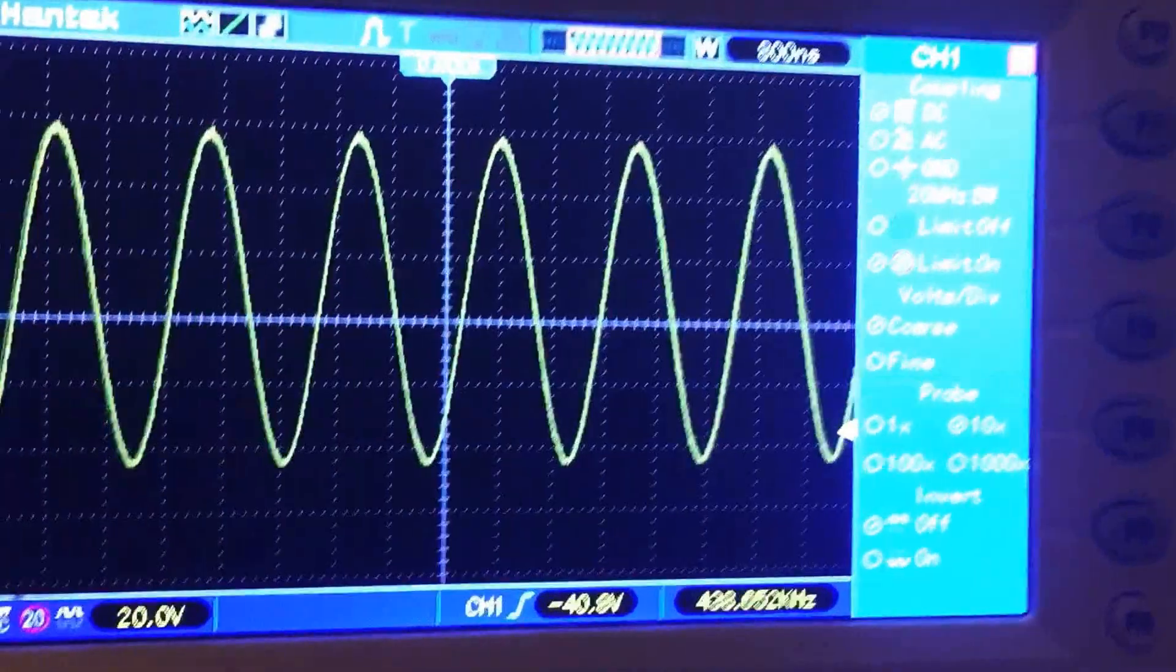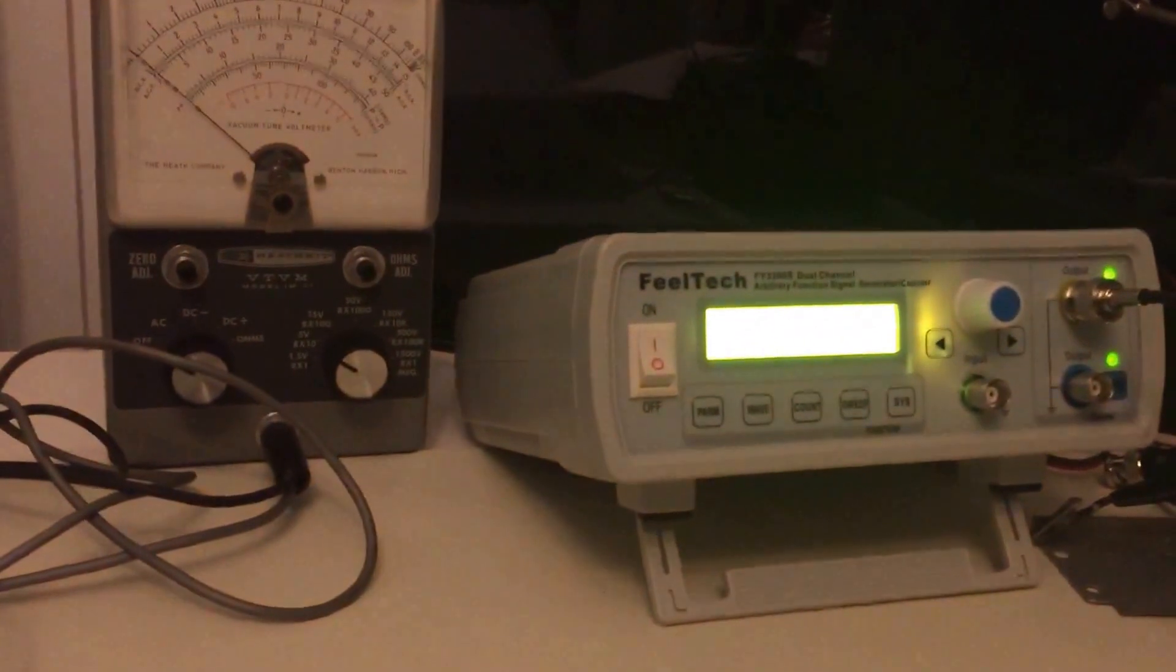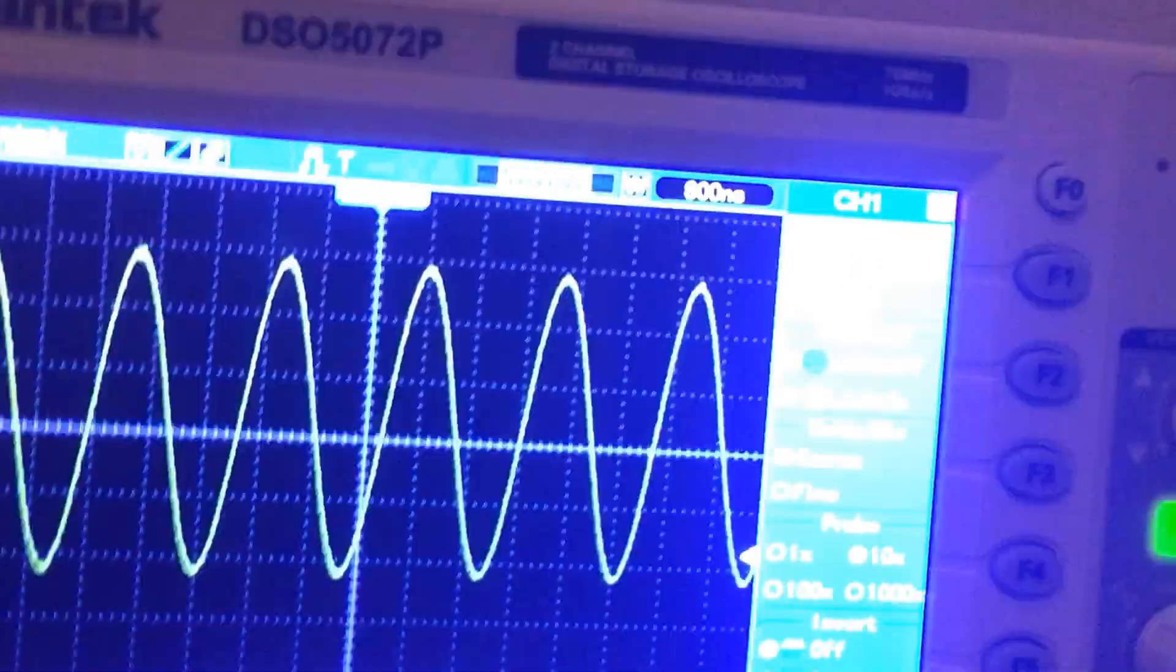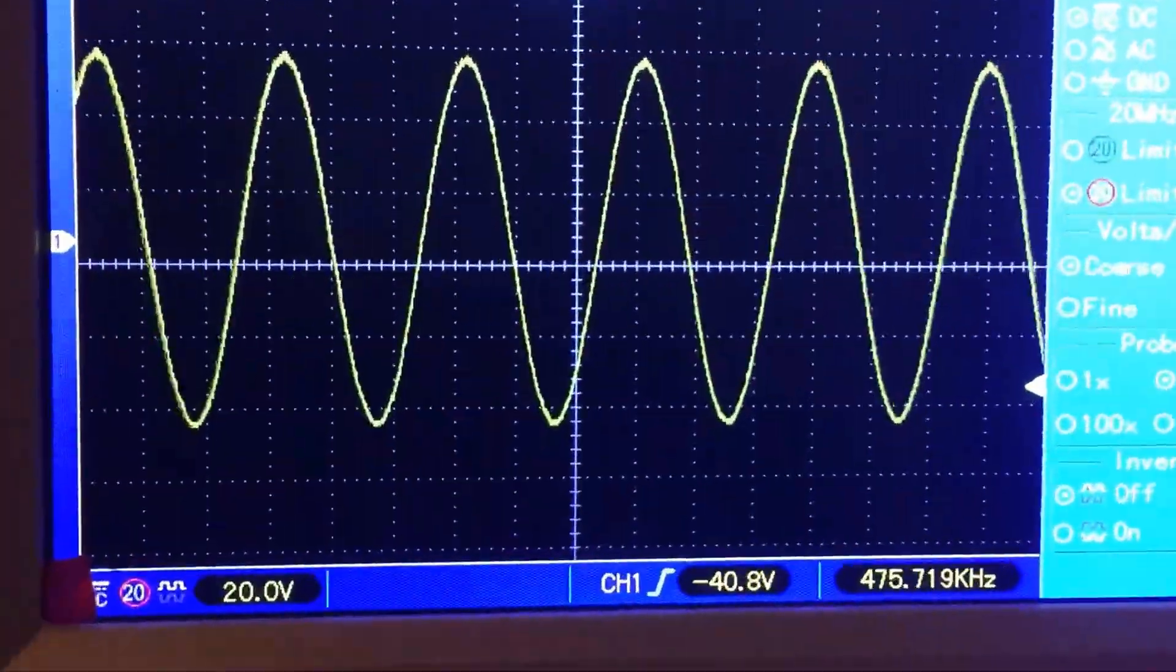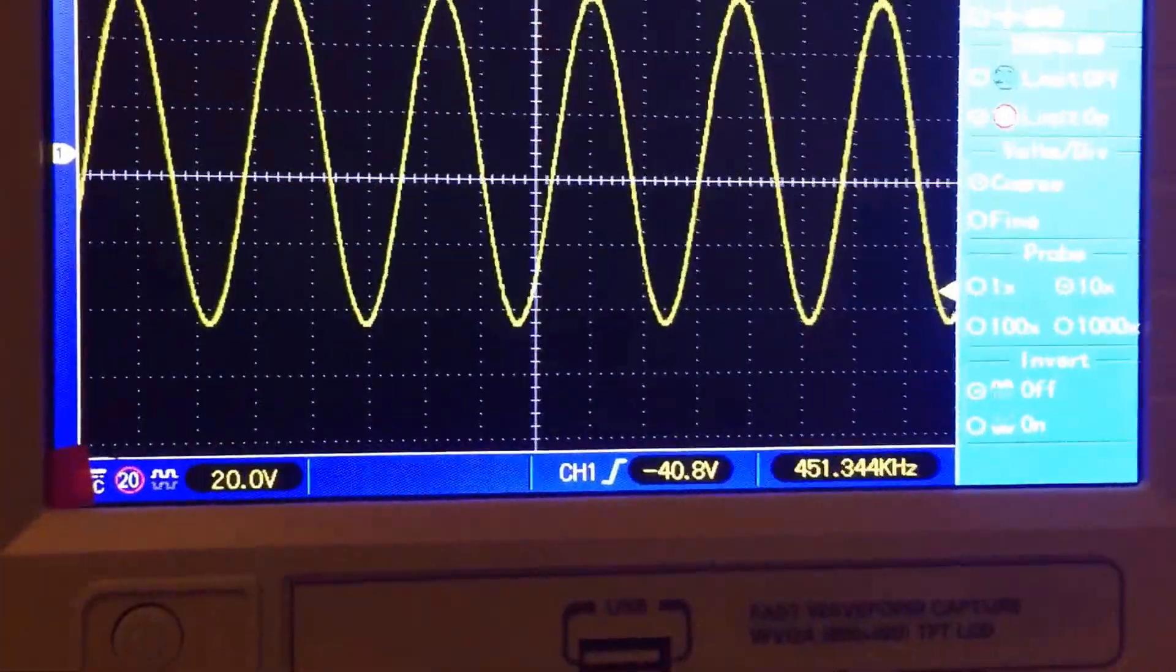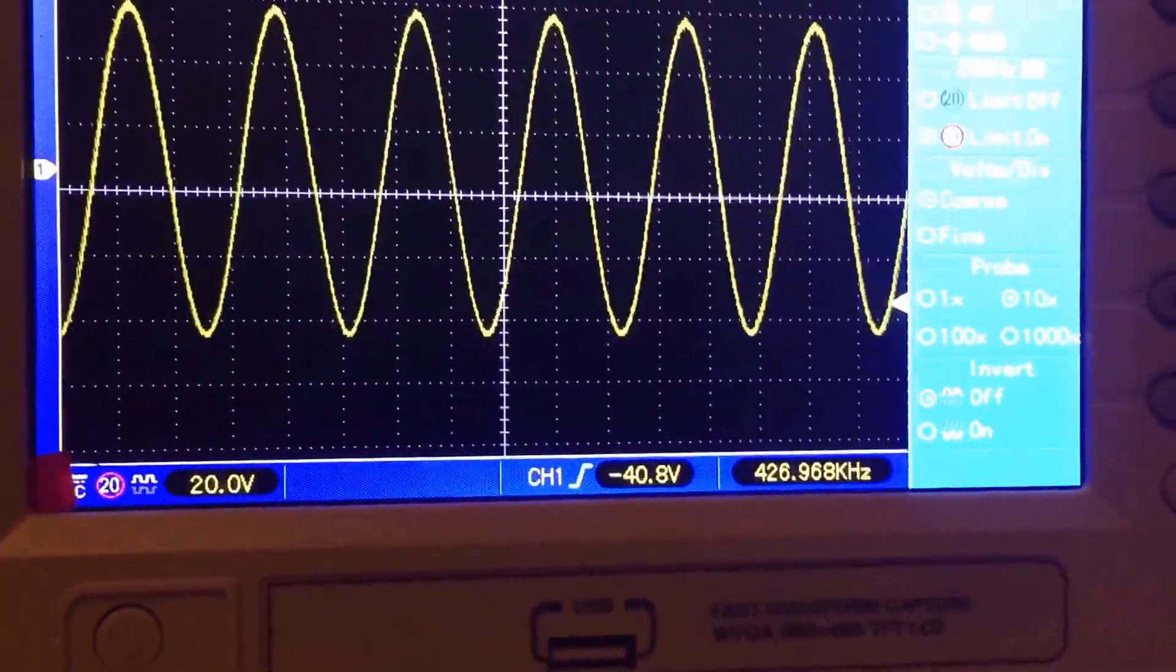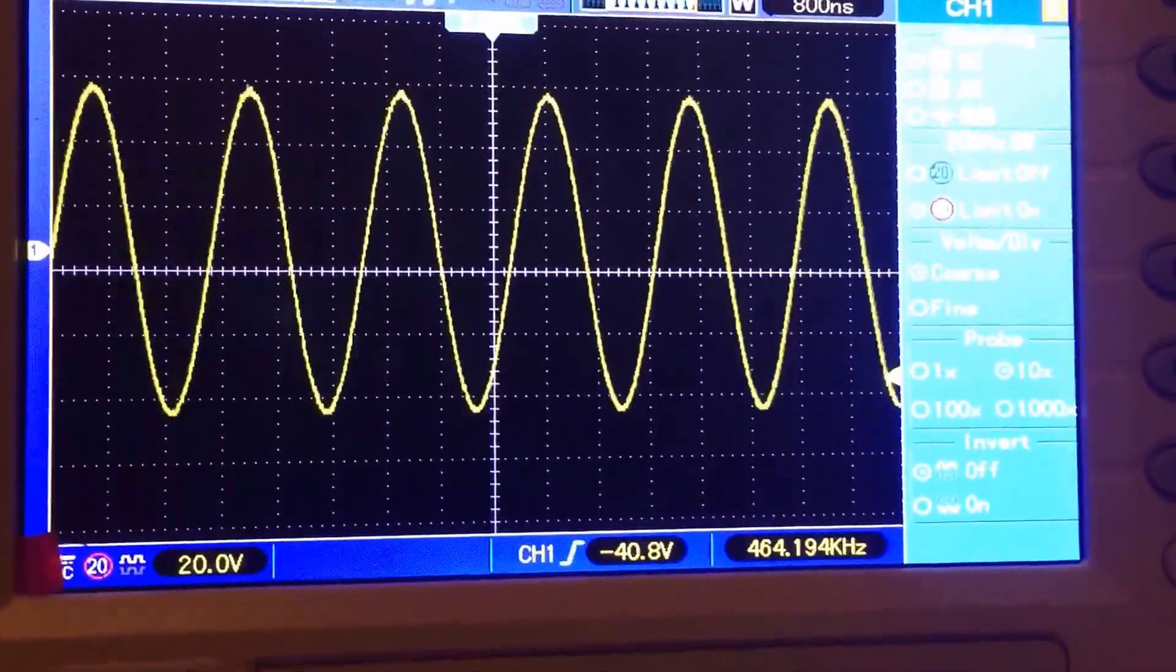And this is what the output looks like on the Hantek. Now, unfortunately, this does not have a trigger for the sweep generator, which makes it pretty useless for the oscilloscope, except for the fact that it does have the FFT. So I'm going to switch this over to FFT and we'll see what this looks like on the spectrum.